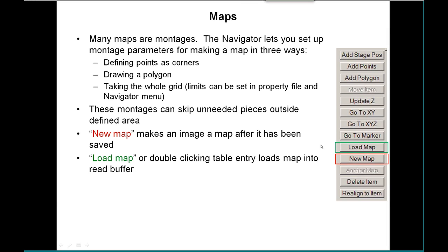These montages, unlike regular rectangular ones, can skip unneeded pieces outside the defined area. Once you have a saved image — either a montage, which is automatically saved, or a single image saved through File — you push 'New Map' and it makes a map out of it. To reload a map into the read buffer, push 'Load Map' or simply double-click the entry in the table.